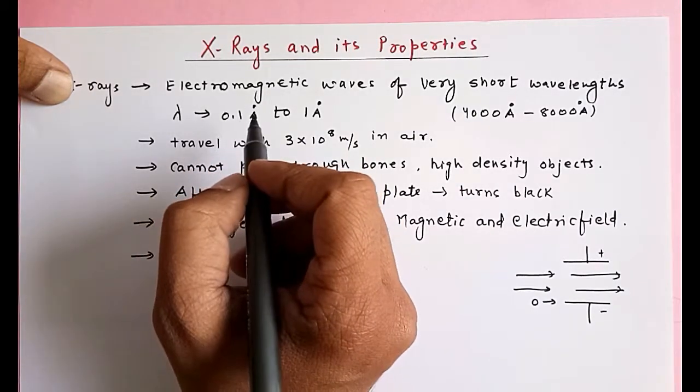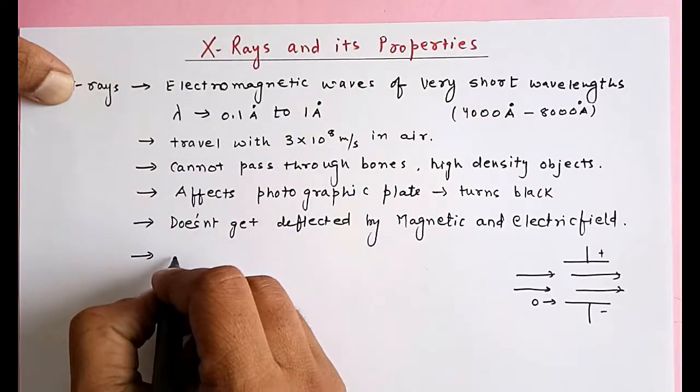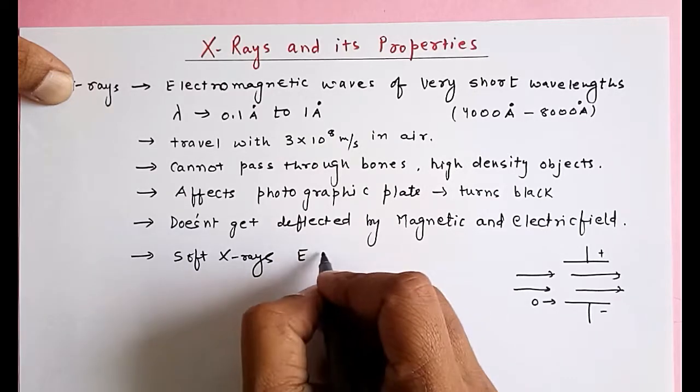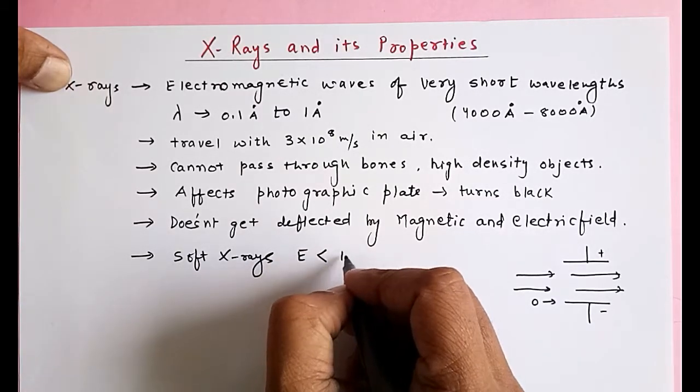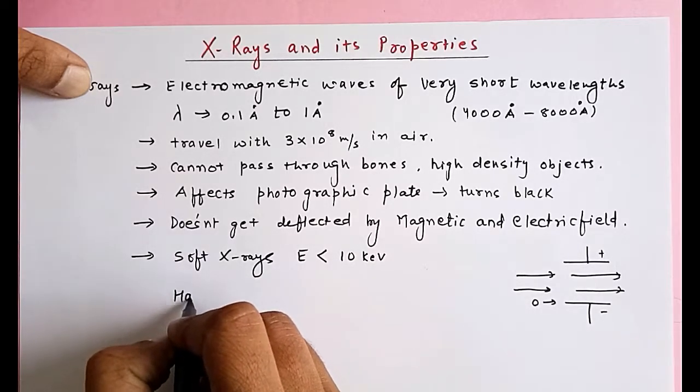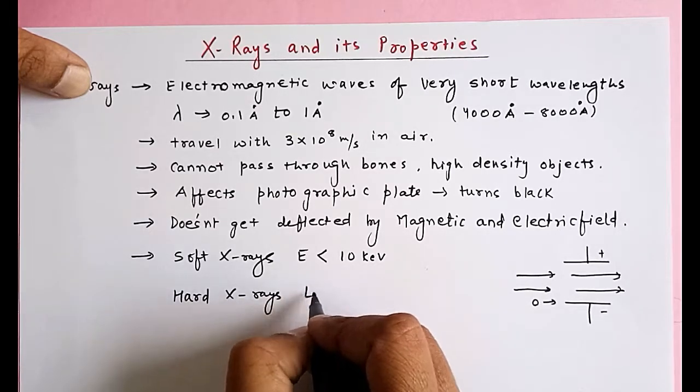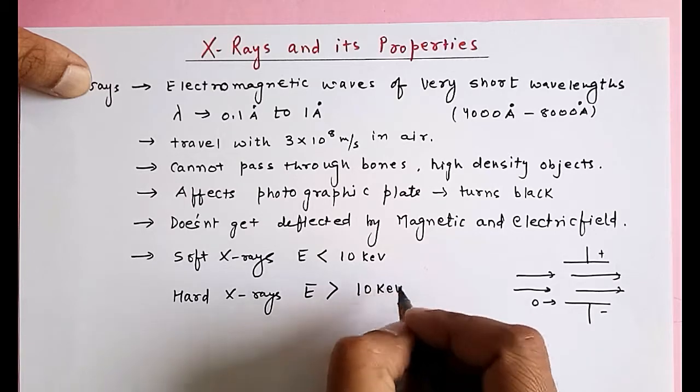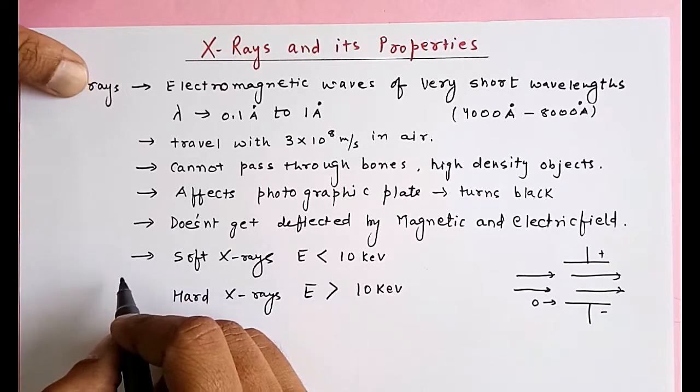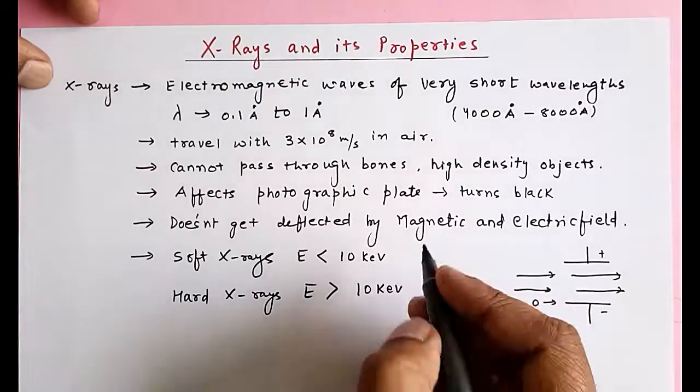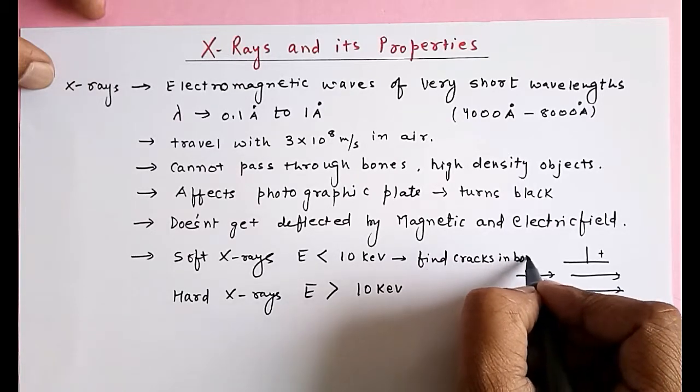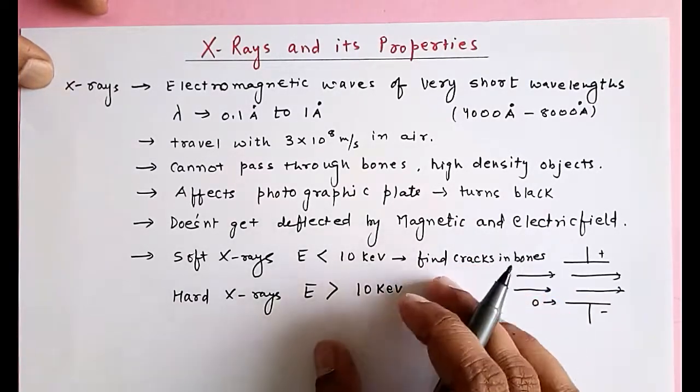On the basis of the energy of the photons, we can divide X-rays into two parts. Soft X-rays are those whose energy is less than 10 keV, kilo electron volt. These soft X-rays are normally used to find cracks in bones and for mostly medicinal use.